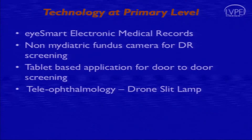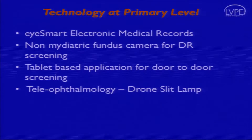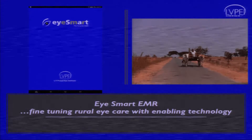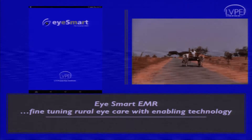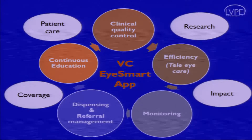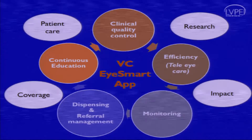These are the technologies we are using at vision centers to reduce the gap in detecting posterior segment diseases and managing other conditions: the iSmart app which Mukesh spoke about, a non-mydriatic camera, a tablet-based application for door-to-door screening, and a drone slit lamp. The iSmart app is a tablet-based application where the vision technician enters data electronically, takes a picture, and uploads it to be viewed at the secondary center or at the command center in the base hospital.